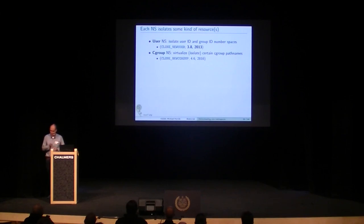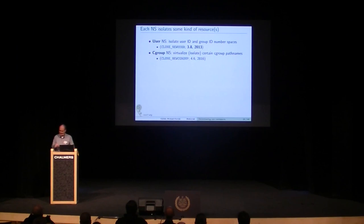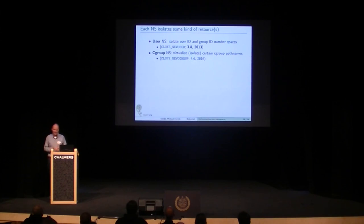Life got really interesting with user namespaces, which reached a milestone of maturity about five or six years ago. What's being isolated here is user IDs and group IDs — I'll come back to what that means soon. The most recently added namespace type is cgroup namespaces. All I'll say is that once you understand what cgroups are, cgroup namespaces are super simple — cgroups themselves are quite complicated, but cgroup namespaces are not.